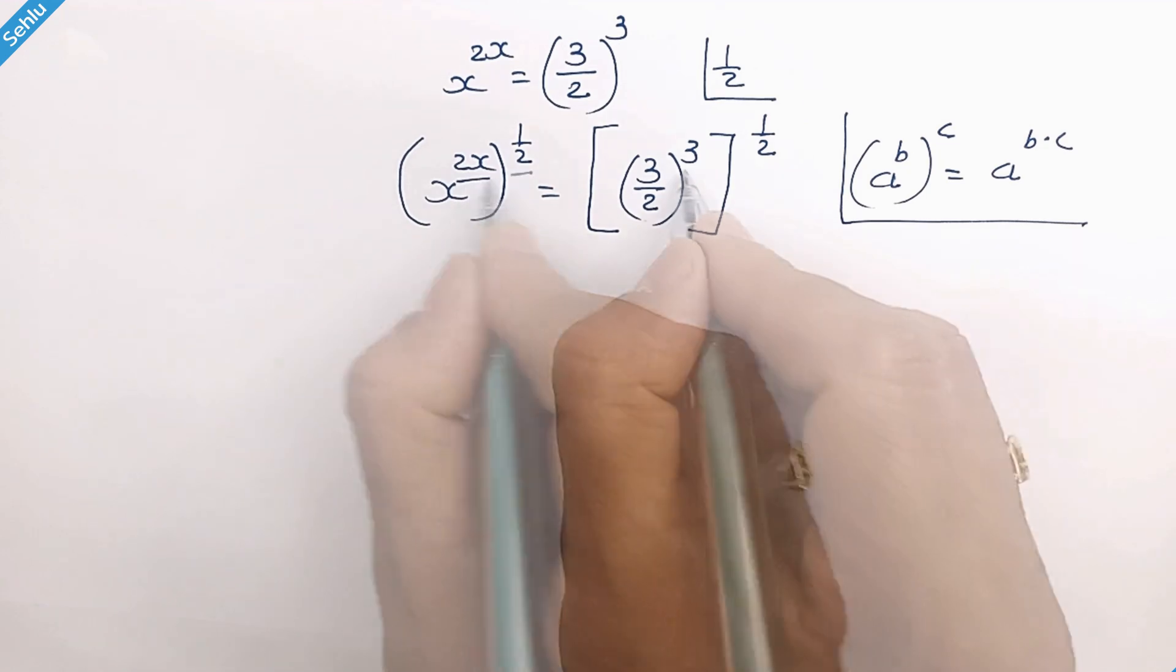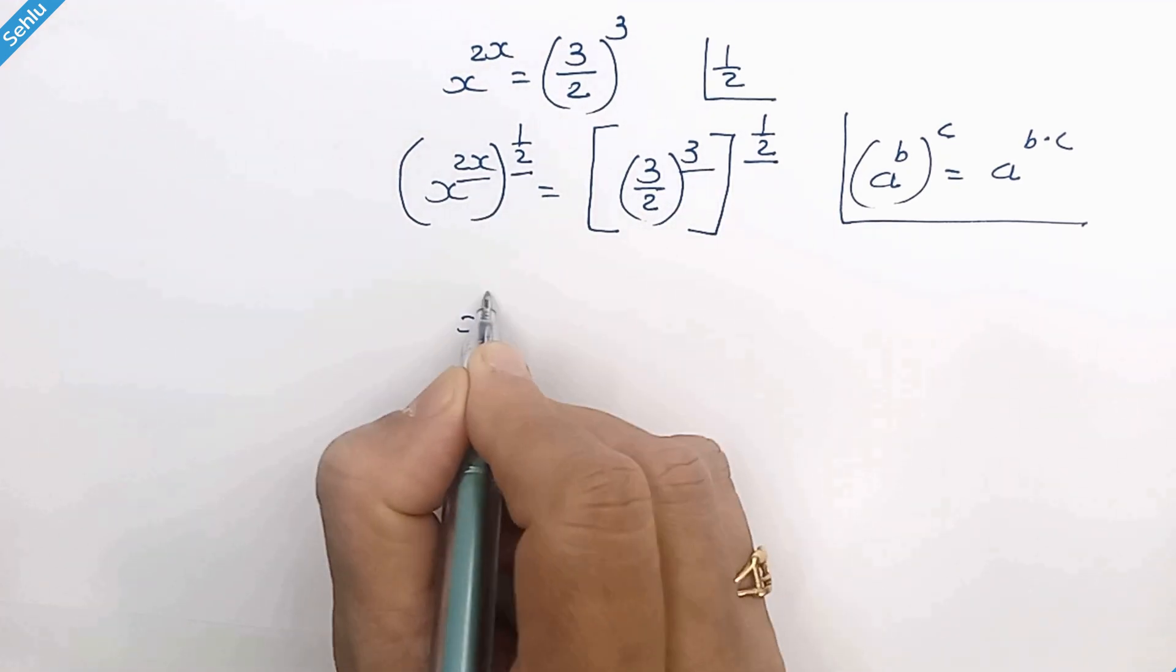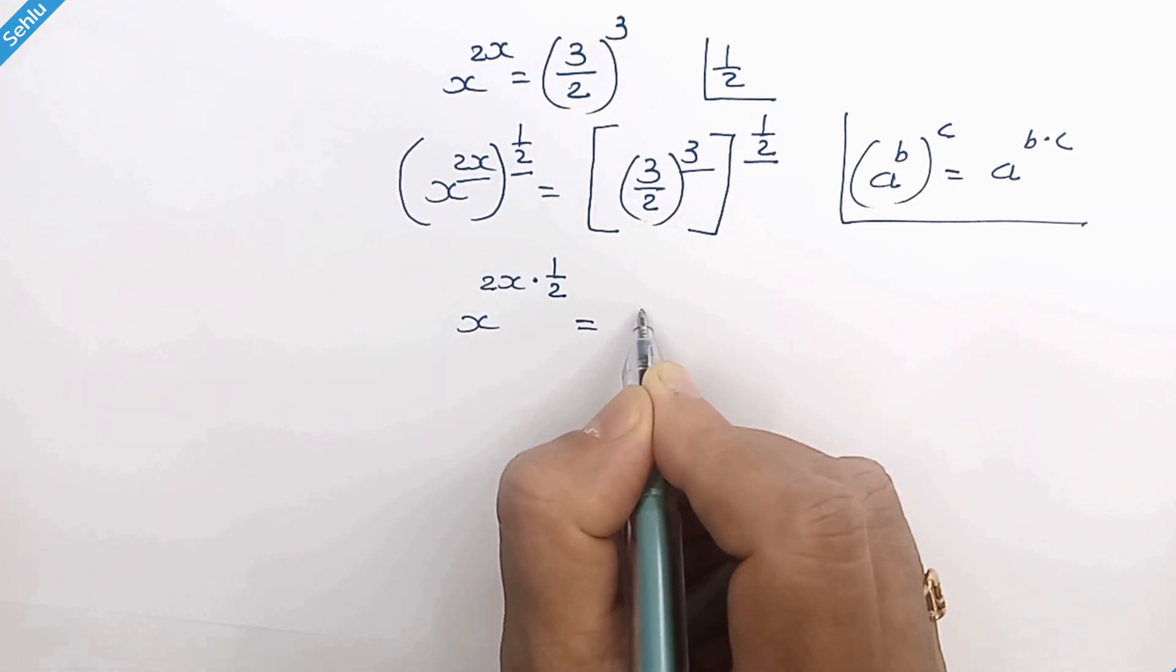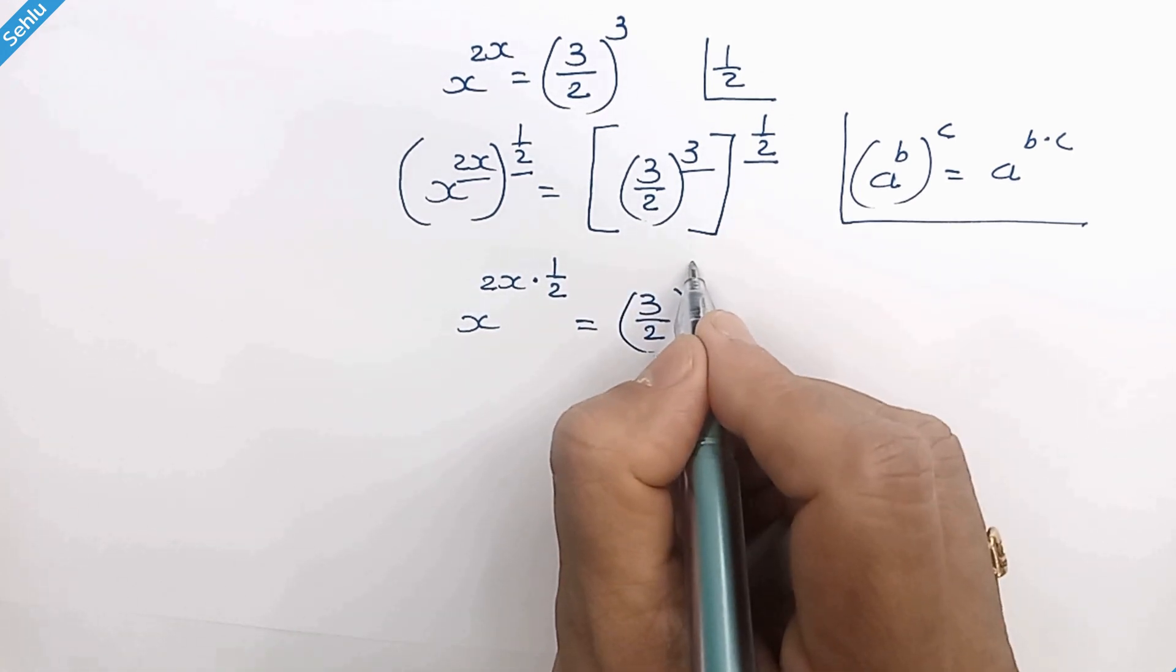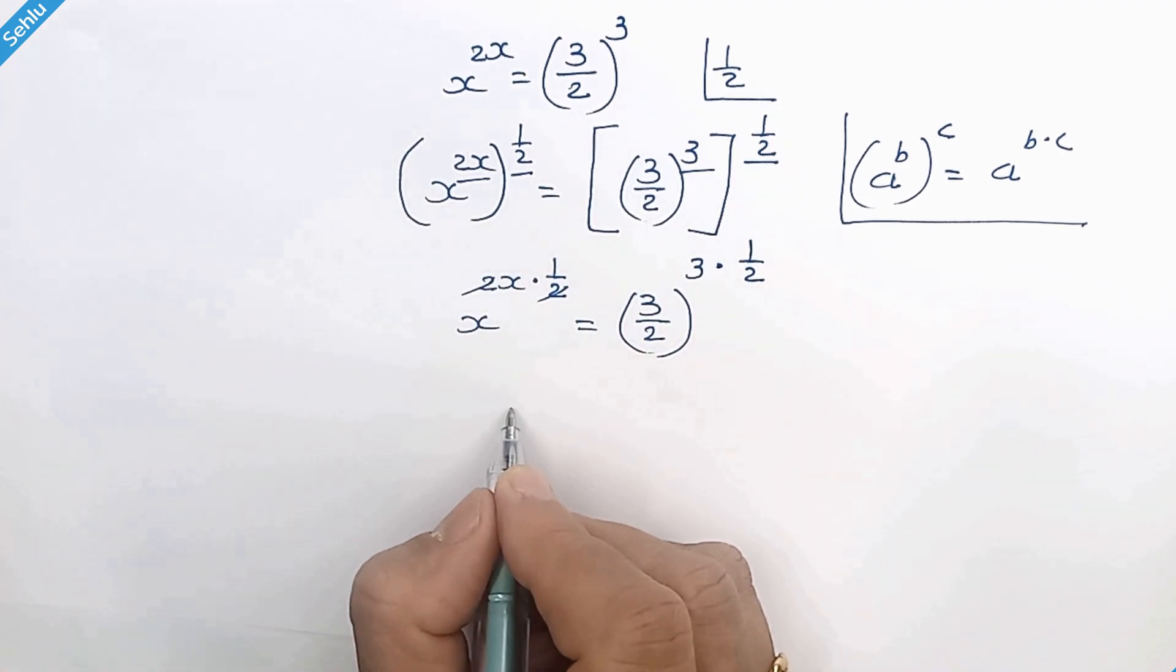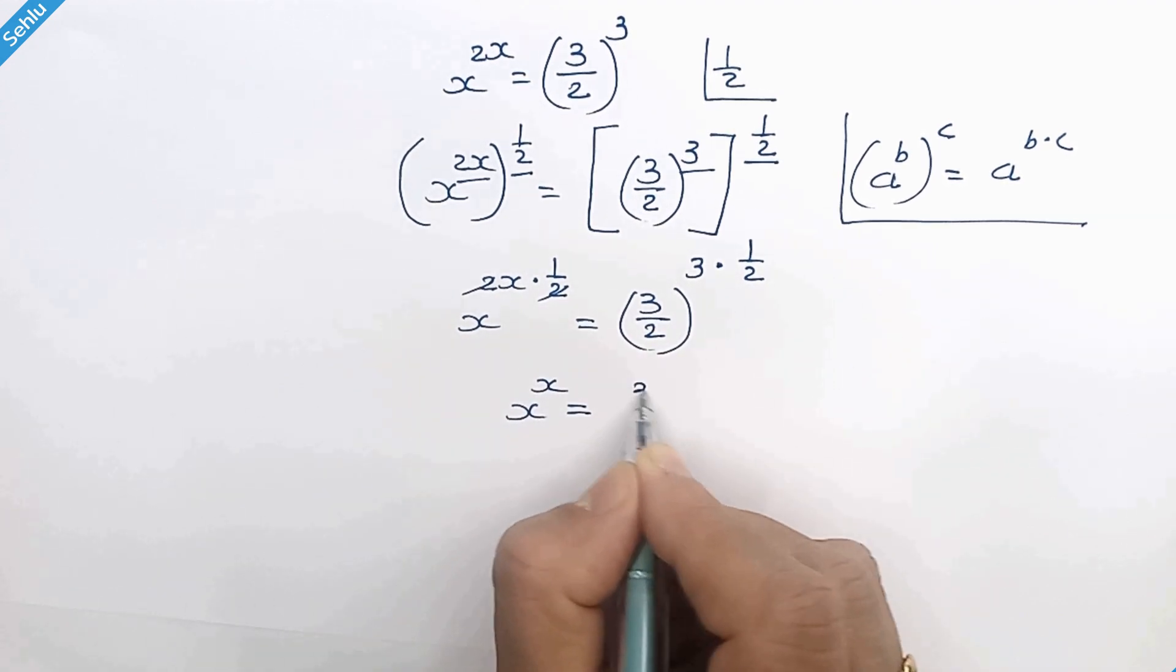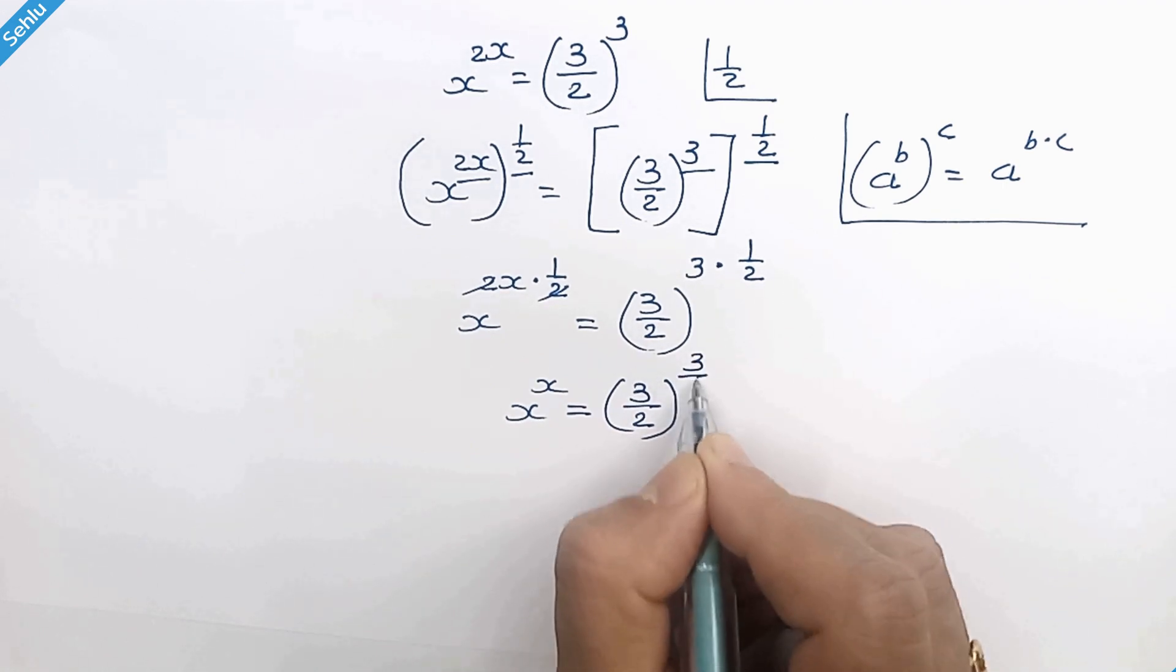We can multiply this 2 and this 2. So it will be x to the power 2x times 1 over 2 is equal to 3 over 2 whole to the power 3 times 1 over 2. So these 2 get cancelled out. Now we have x to the power x is equal to 3 over 2 whole to the power 3 over 2.